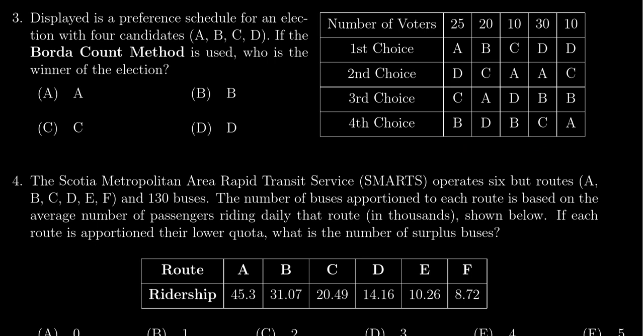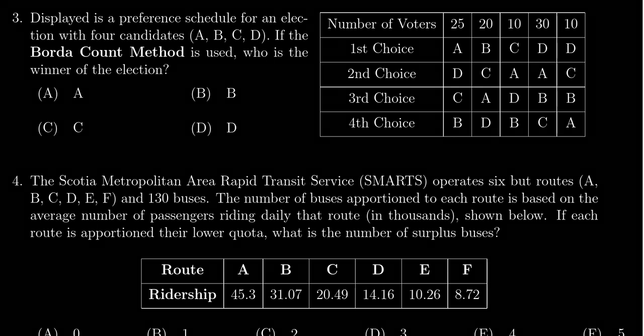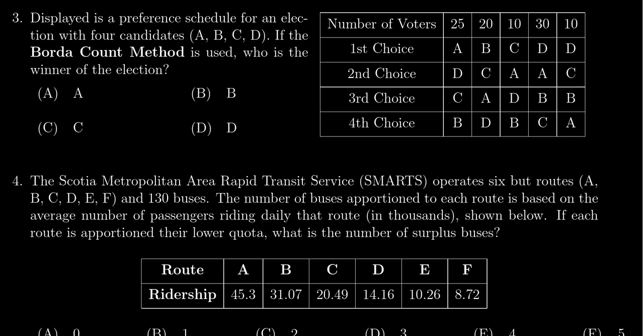The Borda Count gives candidates points based upon their ranking. Now since we only have to determine the winner, we can either use the traditional Borda Count which gives four points for first place, three points for second place, etc., or I can use the reduced Borda Count where I'm only gonna give three points for first place, two points for second, one point for third, and then zero for the fourth. I like that one because we have a zero then I don't have to worry about the last place votes. So let's try to do some calculations here.